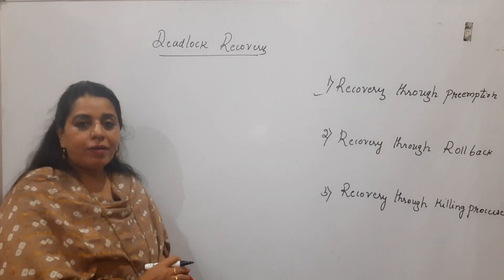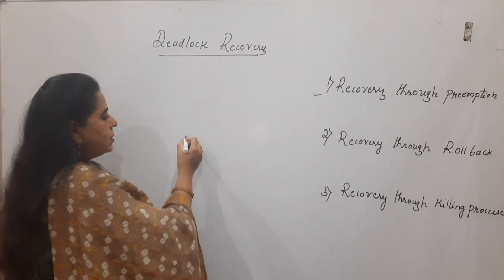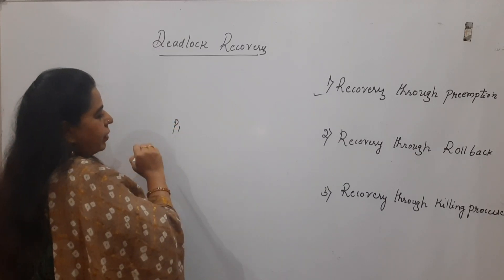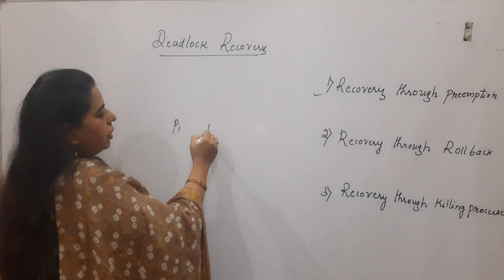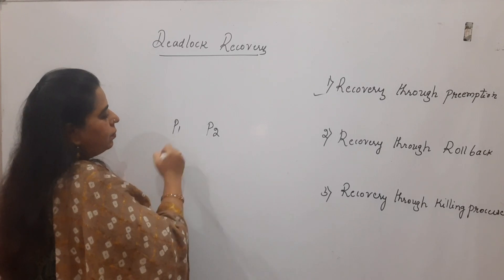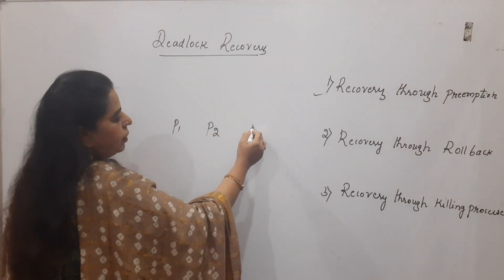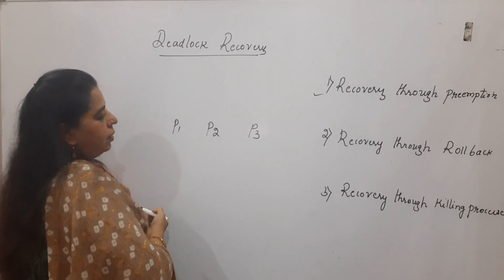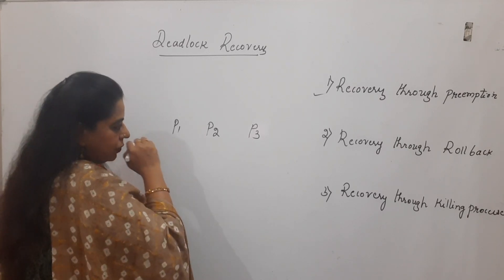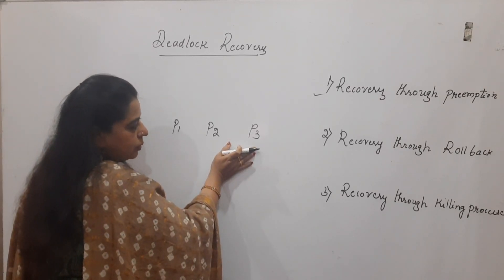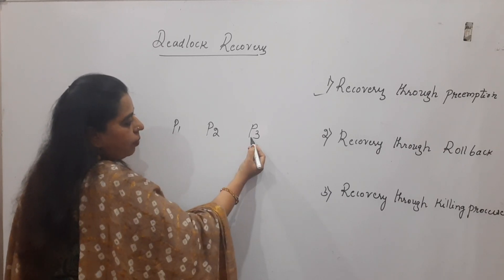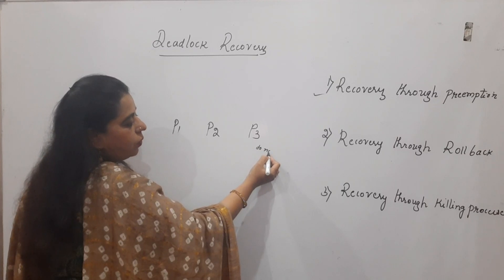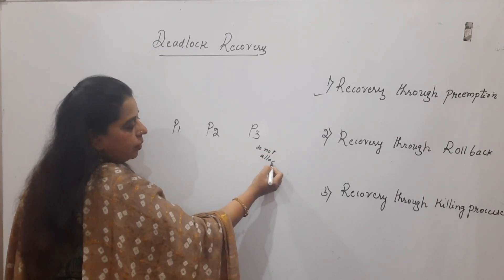The second method is recovery through rollback. Suppose process P1 is requesting some resources, then P2 comes into the system and also makes requests, then P3 comes and makes a request. If you see that there is a deadlock happening at this point, then try to rollback — meaning do not satisfy the request for P3 or do not allocate resources for P3.